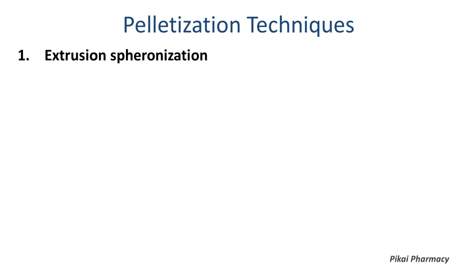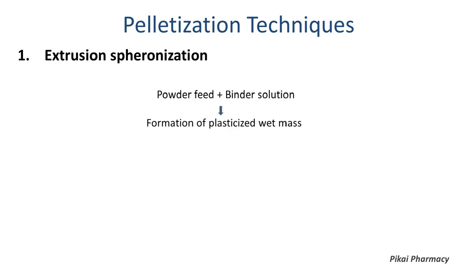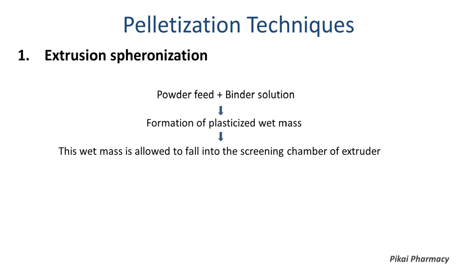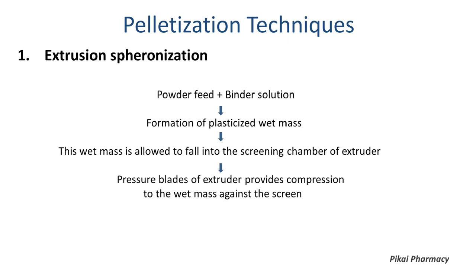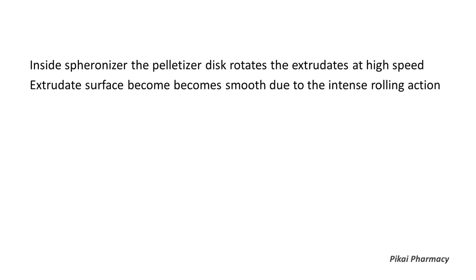The first pelletization technique is extrusion-spheronization. In this technique, powder feed and binder solution are mixed together, forming a plasticized wet mass. This mass falls into the screening chamber of the extruder, where pressure blades compress it against the screen, causing extruded material to discharge. The extrudates are sent to the spheronizer, where a pelletizer disc rotates them at very high speed against the vessel wall, causing the surface to become smooth due to intense rolling action, yielding smooth round pellets.